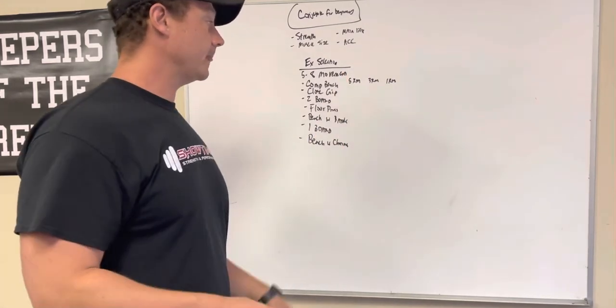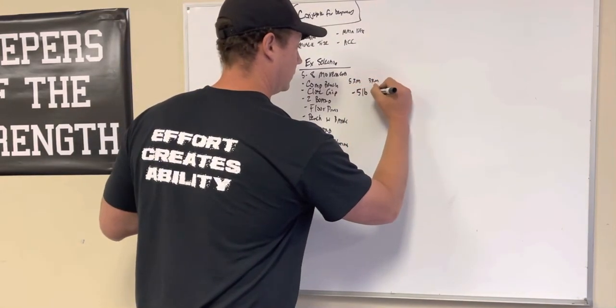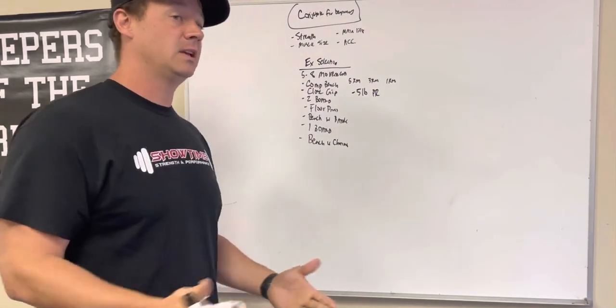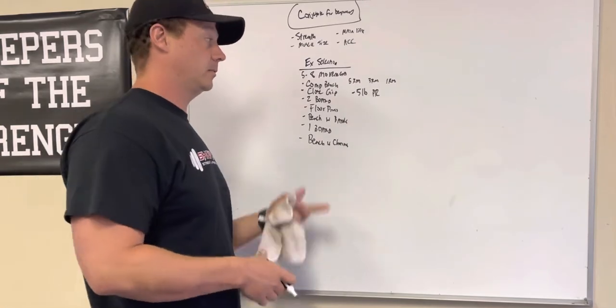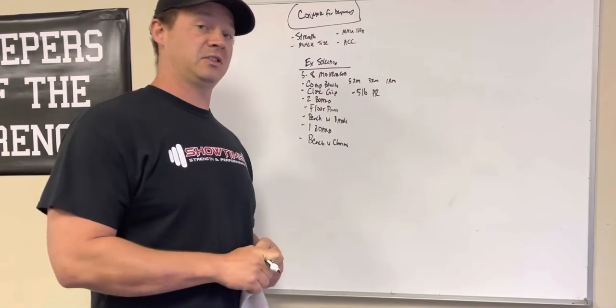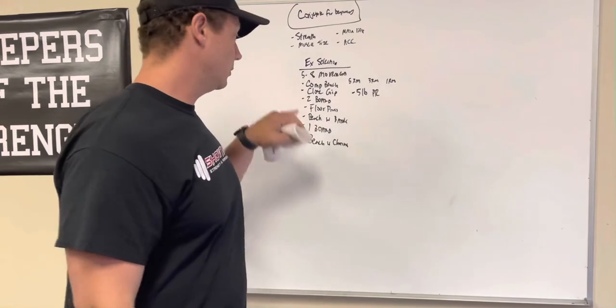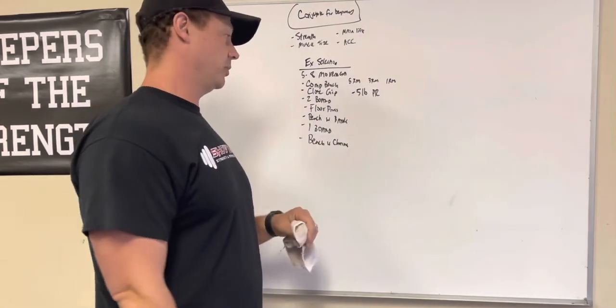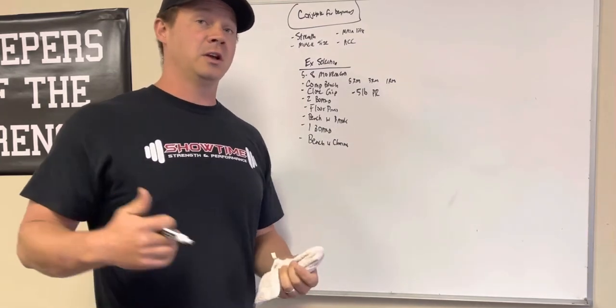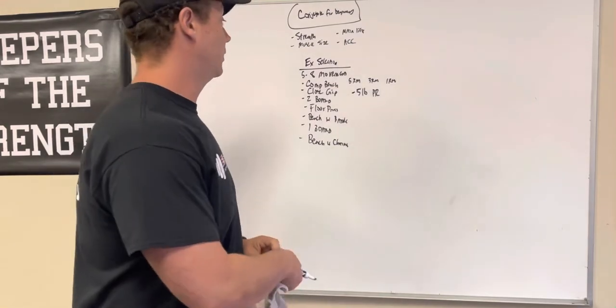And then, what you'll do is just rotate back through, and your goal is to hit a five pound PR. Now, five pound PR is not real sexy, but you got to think longevity. If you hit a five pound PR, let's say, three, four times a year, that's 20 pounds on each of these lifts throughout the year. You do that for 10 years. Your two board press just went up 200 pounds. Your one board press just went up 200 pounds. Your competition bench went up 200 pounds. So if you're benching 300, then you get your bench up to 500. That's a huge increase.